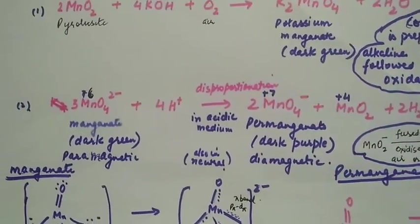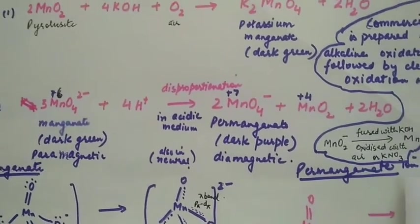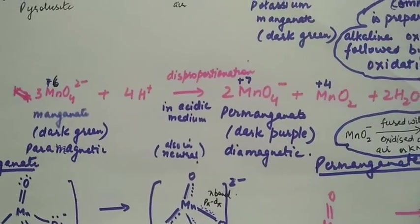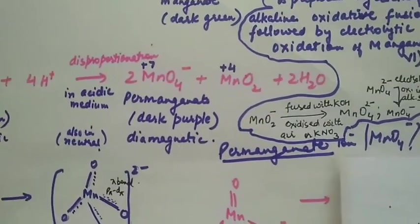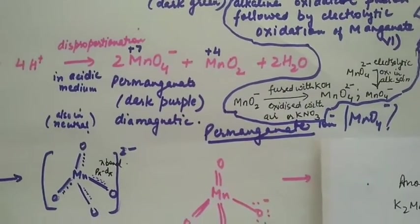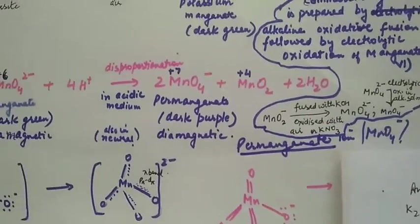One more difference between the two: manganate is paramagnetic in nature, while permanganate is diamagnetic.